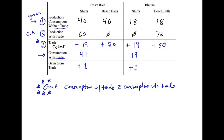Let's go with 50 — a number between 40 and 54. Costa Rica is not producing anything, but they're gaining 50, so they can consume 50. Before, without trade, they could only consume 40 — now they can consume 10 additional beach balls. Consumption with trade is greater than consumption without trade. Bhutan was producing 72 when specializing, gave away 50, and can now consume 22. Before trade they could only consume 18 by themselves — so they gained 4. All gains from trade were positive.